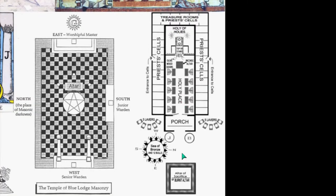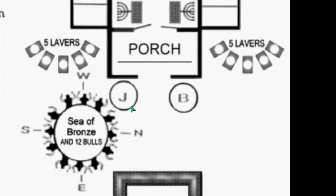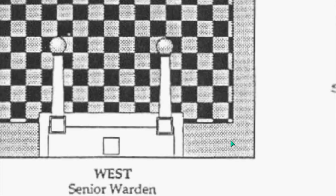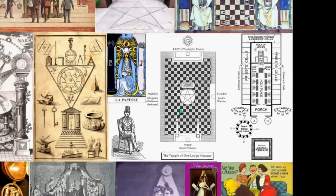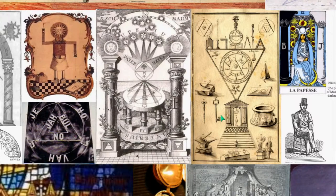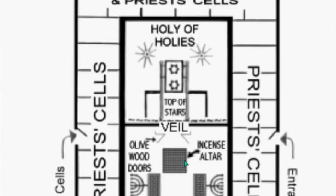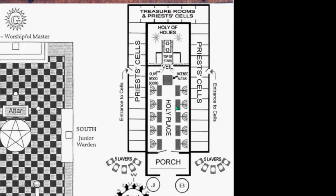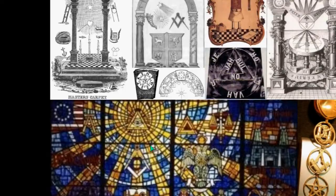Now here is the true temple — Solomon's Temple — with Joachim and Boaz. In the Freemasonic version the pillars aren't even named, which is why I believe they're pillars of Hercules rather than Joachim and Boaz. In the true temple Joachim and Boaz are in the east, whereas the Freemasonic pillars are in the west — a complete reversal. What they show as Joachim and Boaz is simply a smokescreen. Here's the porch, and the Holy of Holies sits in the west. This is a complete opposite against God.